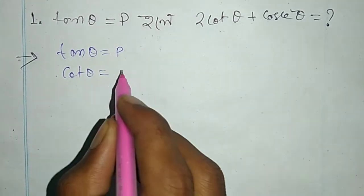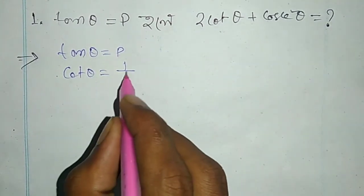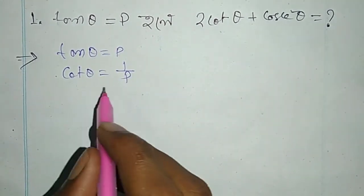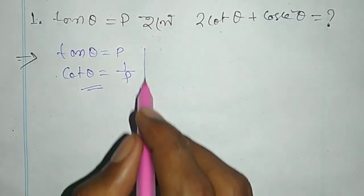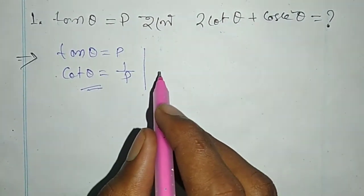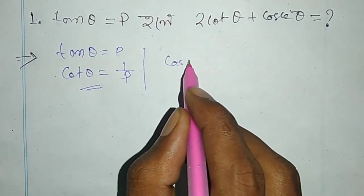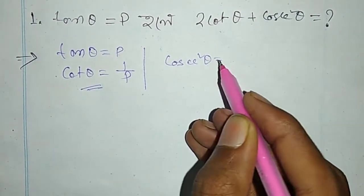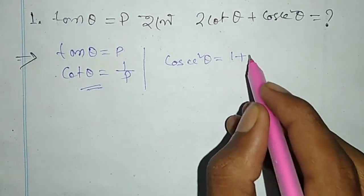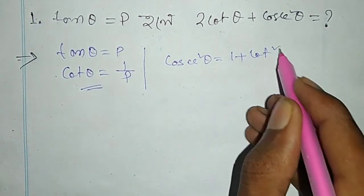1 by tan θ, 1 by tan θ can be cot θ. This gives us cos θ. cosec θ, so I'm ready 1 plus cot² θ.